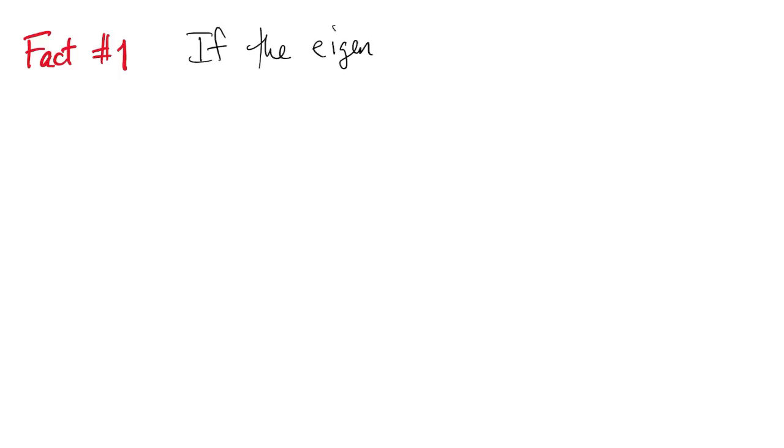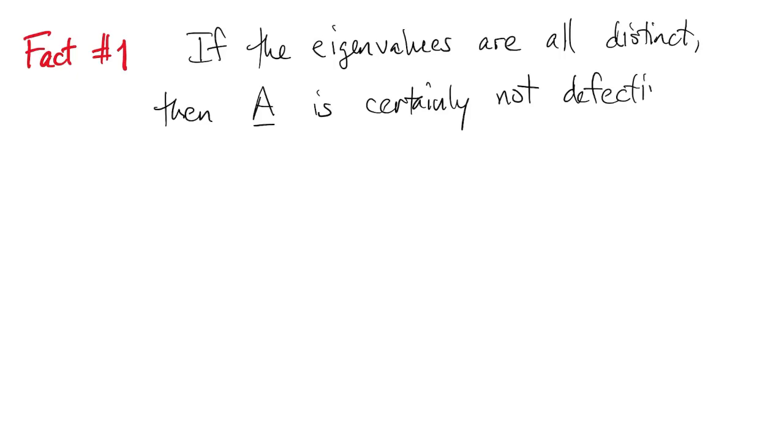If the eigenvalues in the matrix are all distinct numbers, there are no repeats, then A is not defective. The converse of this is not true. If you do have repeated eigenvalues, A may or may not be defective. You have to look at some more information.